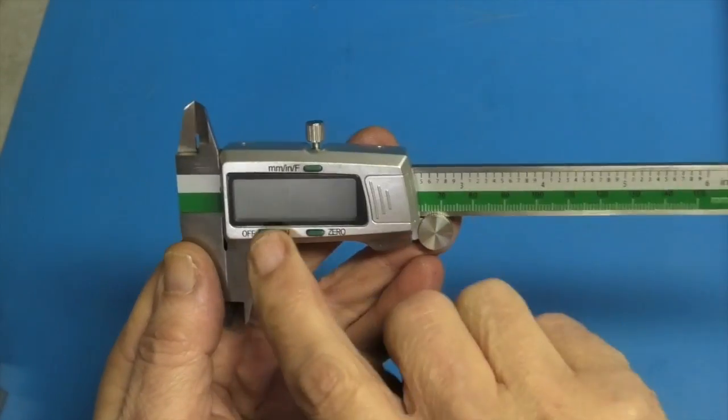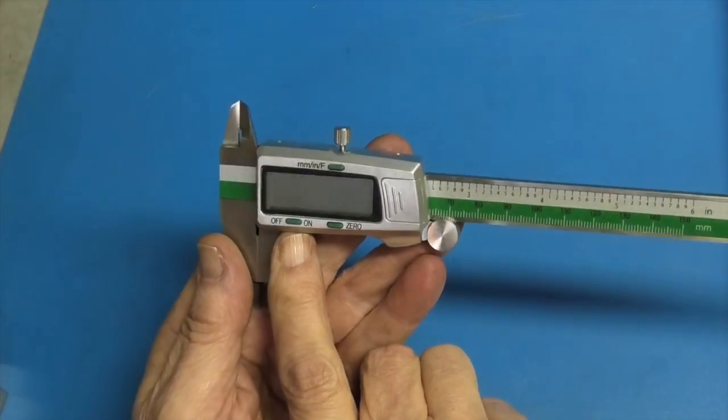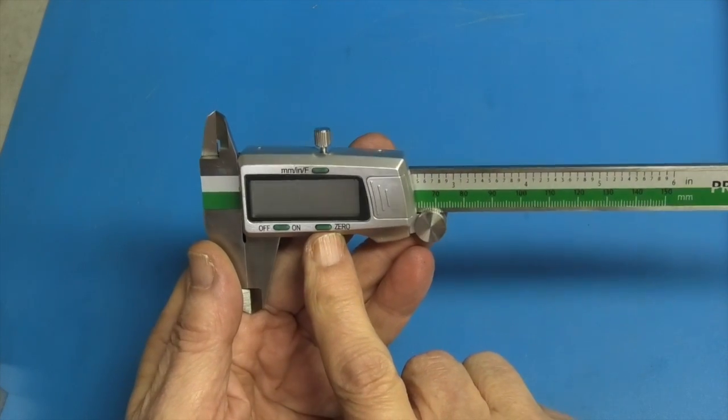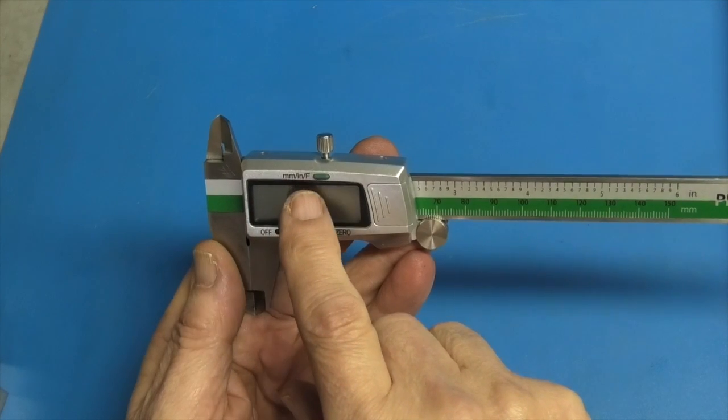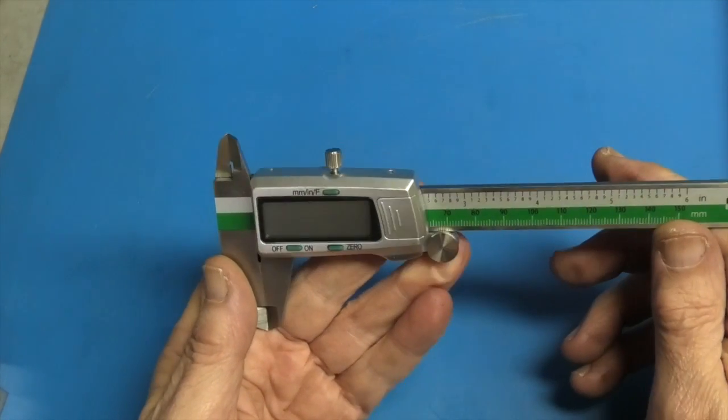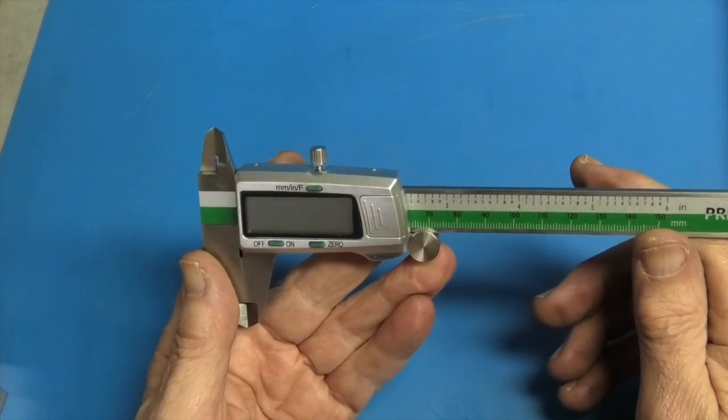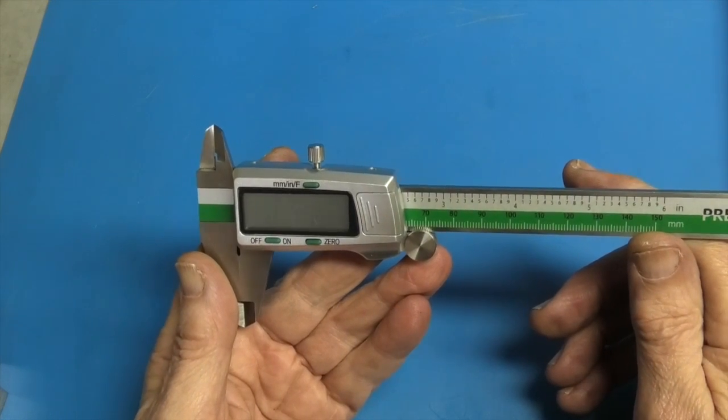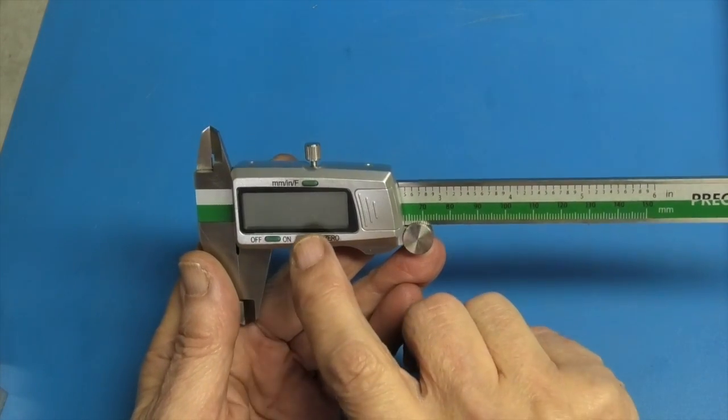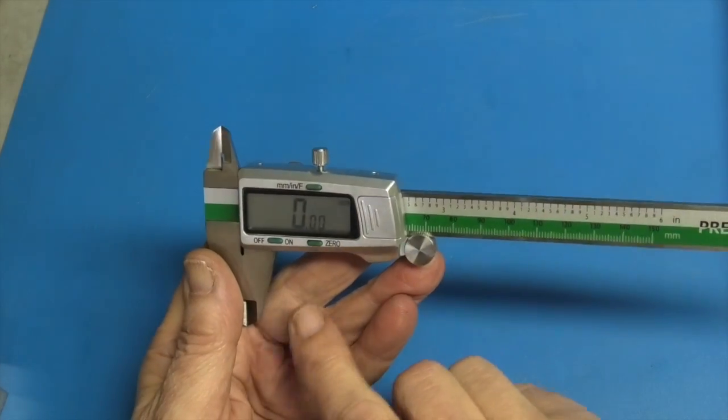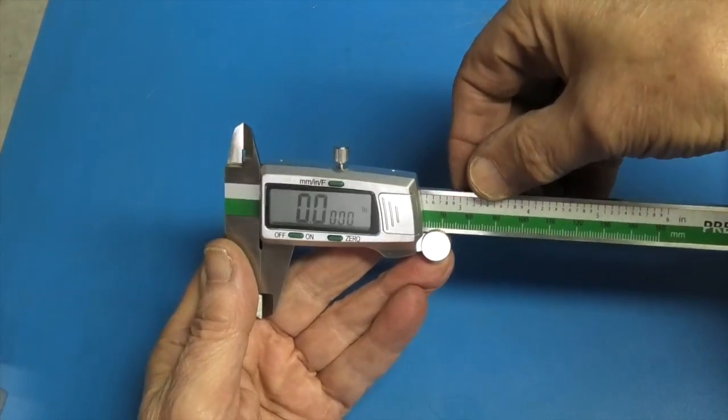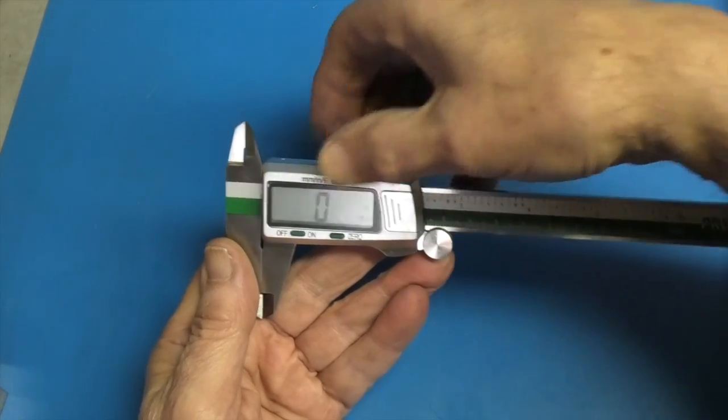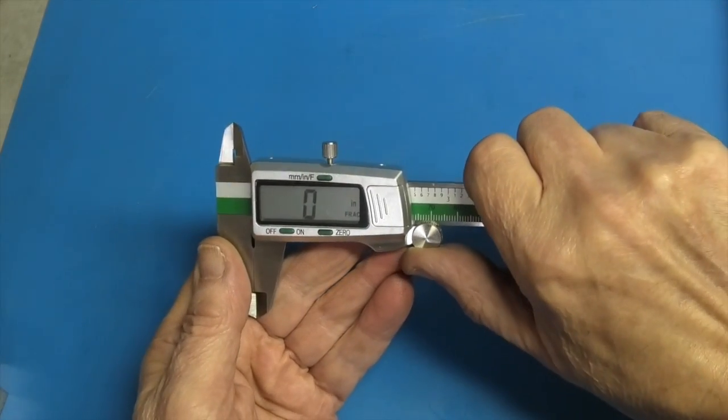You have three buttons. One's going off. One's to zero it. And one is to change between the three functions. And the functions are millimetres, inches or fractions of an inch. So if I switch it on. That's in millimetres. I'm going to press this once. That's in inches. Press it again. This will be fractions of an inch.